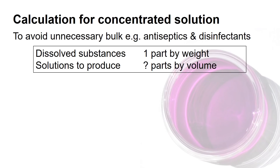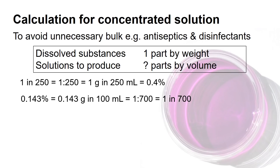To avoid these hassles, we prepare them in the concentrated form, and when needed we will dilute them with distilled water or a suitable vehicle. A good example of that is antiseptics and disinfectants. The expressions of the units are usually expressed in the form of one part in how many parts of the solution.